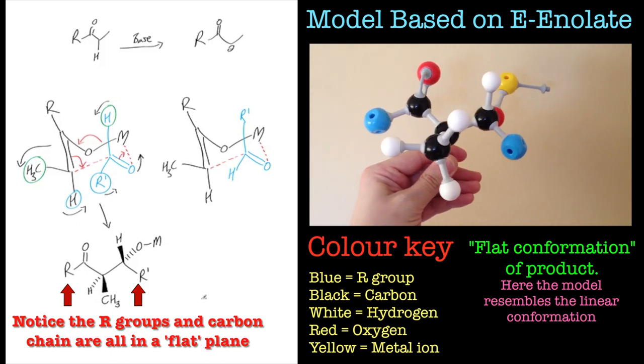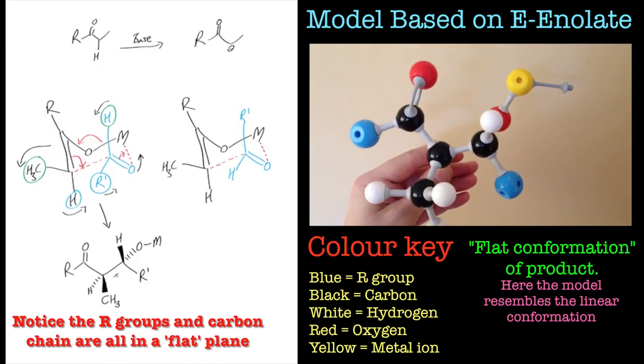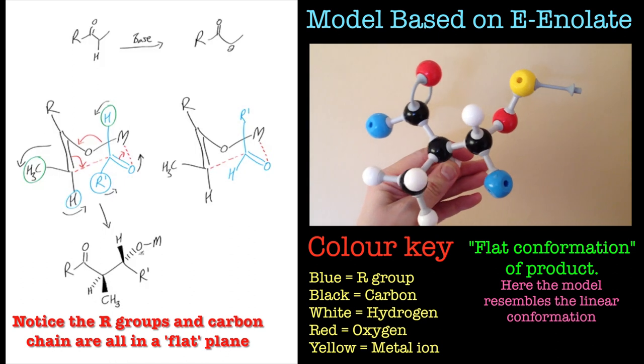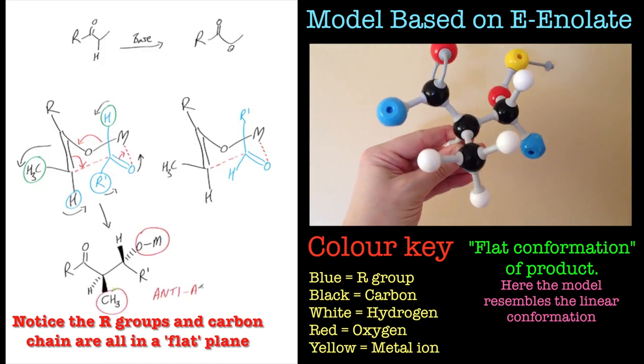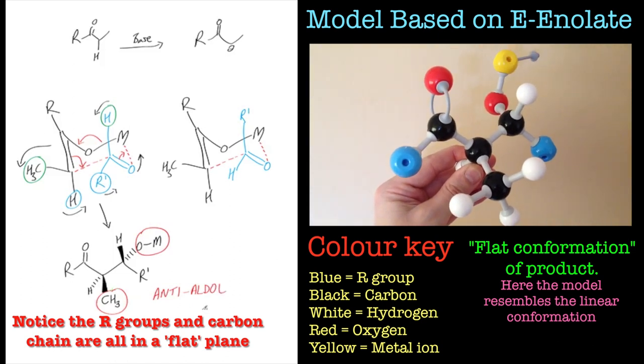Similarly for the other side where the aldehyde has just been attacked, the hydrogen goes forward, which means the R group goes backwards, which also means the OH group will go backwards as well. In this case it's connected to a metal. So that will give you the anti-aldol.